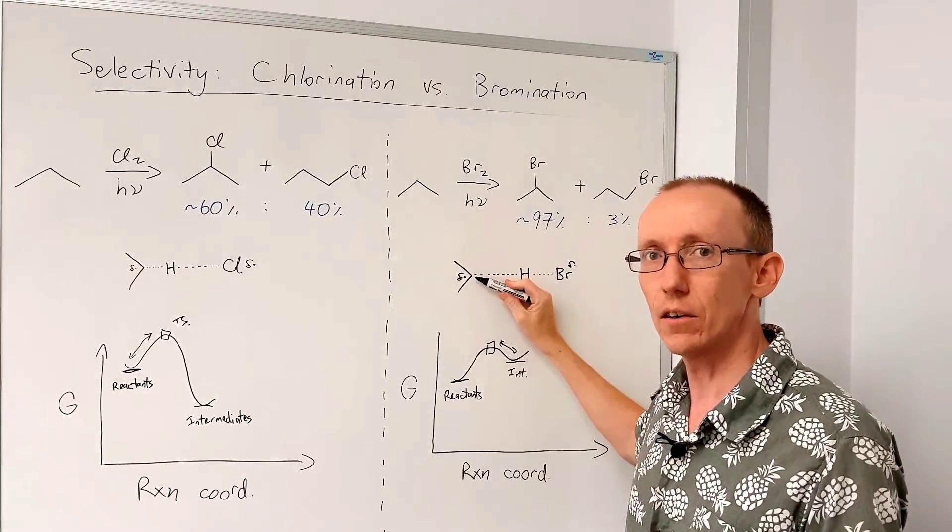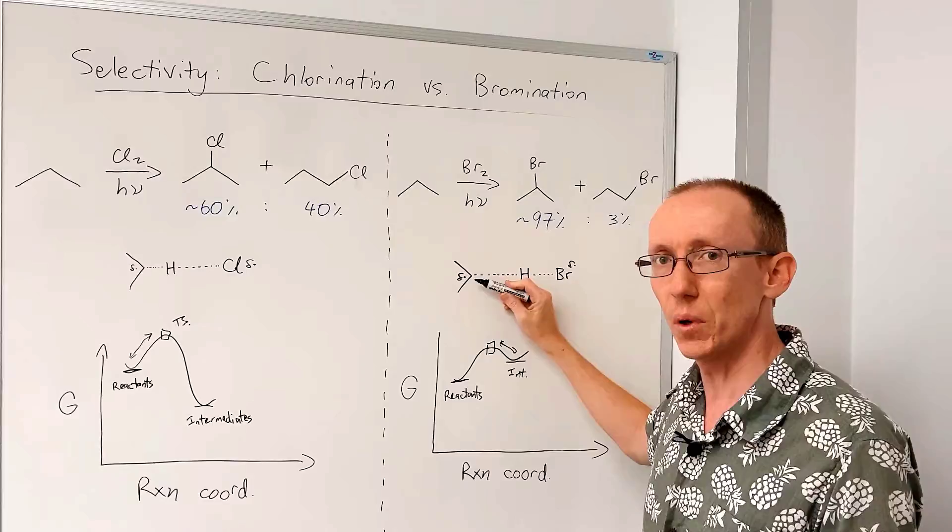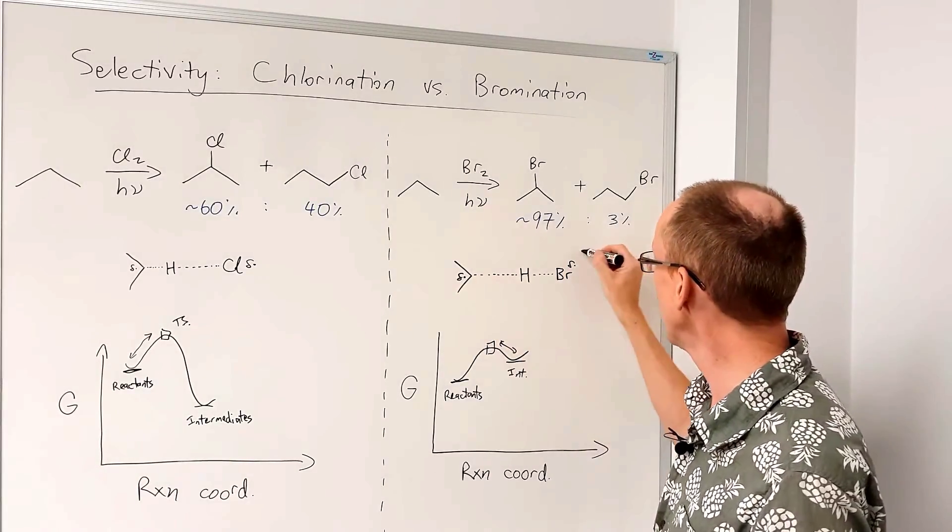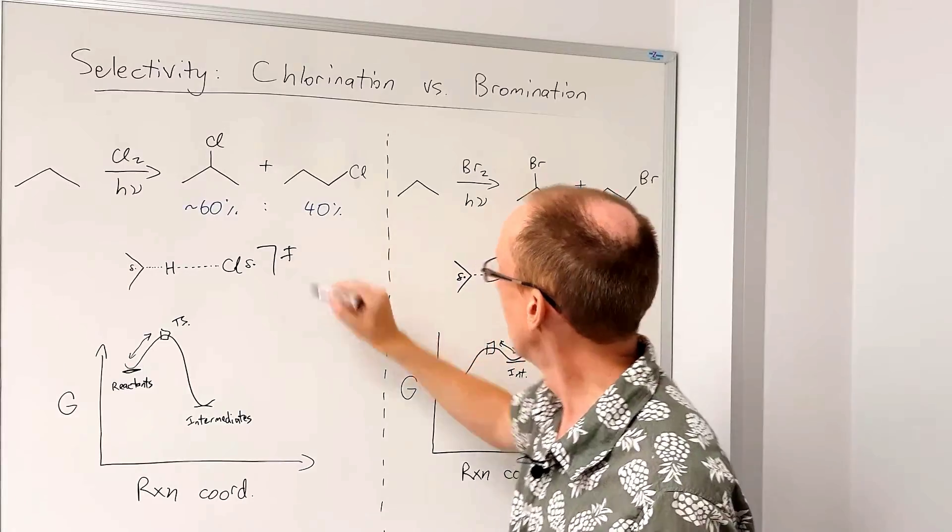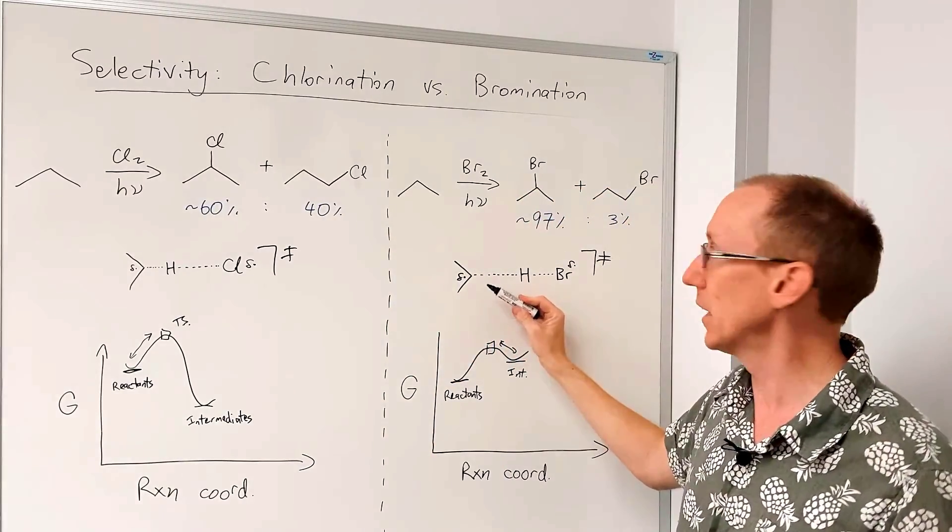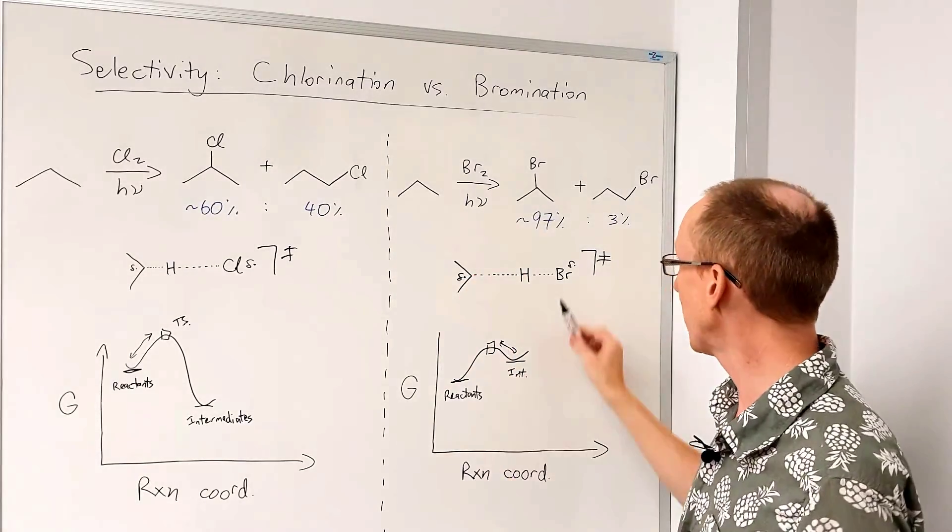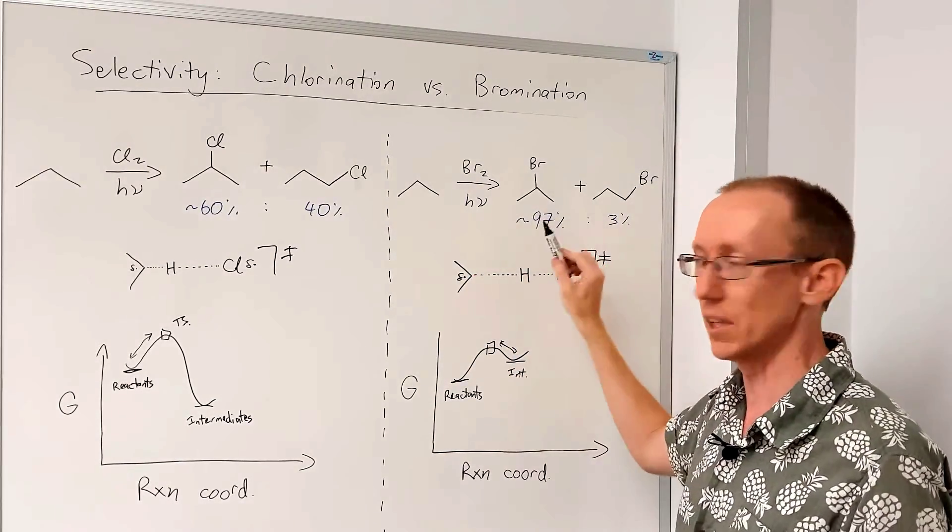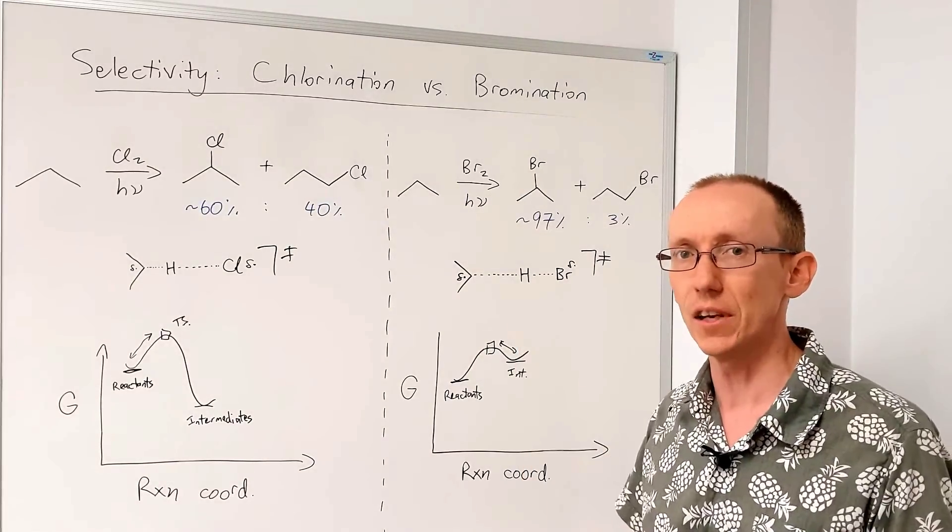We know that secondary alkyl radicals are more stable than primary. And so the difference between this transition state versus the transition state that leads to the primary radical is going to be very much greater. And so we're going to see a greater selectivity between those two because of the bigger difference in the energy of those two transition states.